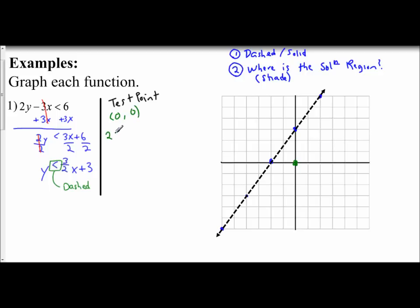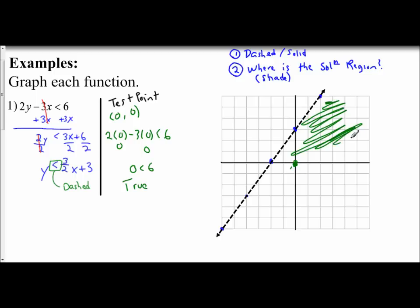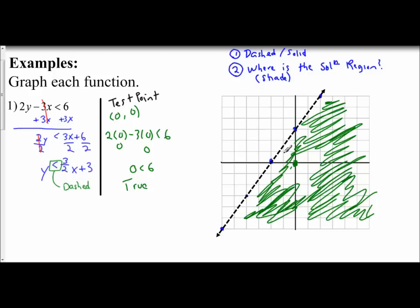So I have 2 times 0 minus 3 times 0 is less than 6. Well, 2 times 0 is 0, 3 times 0 is 0, and 0 minus 0 is 0. So I get 0 is less than 6. When you use a test point, you plug in your x and y, do order of operations, then look at your final inequality statement and ask yourself: is this a true statement? Is 0 less than 6? Yes — so (0, 0) is in the solution region. I shade in the region where the point (0, 0) is located. This is my solution region.